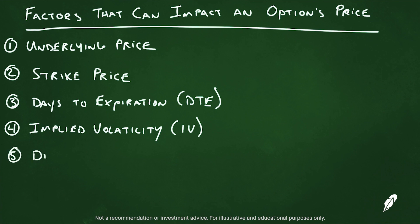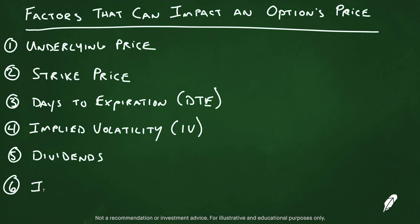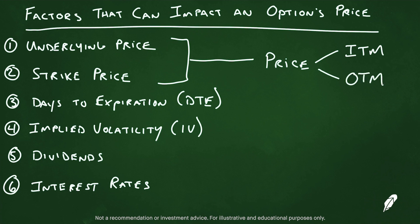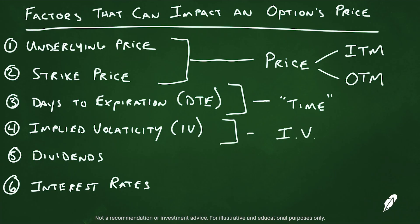There are two additional factors. Fifth, whether or not the stock pays a dividend — if a stock has an upcoming dividend, options will adjust accordingly. Sixth, interest rates — where interest rates are can have an impact on the value of both call and put options. As we talk about options, we bucket these into three main categories: price, which is the underlying and strike price; time, or days to expiration; and implied volatility, which we'll discuss in future episodes.